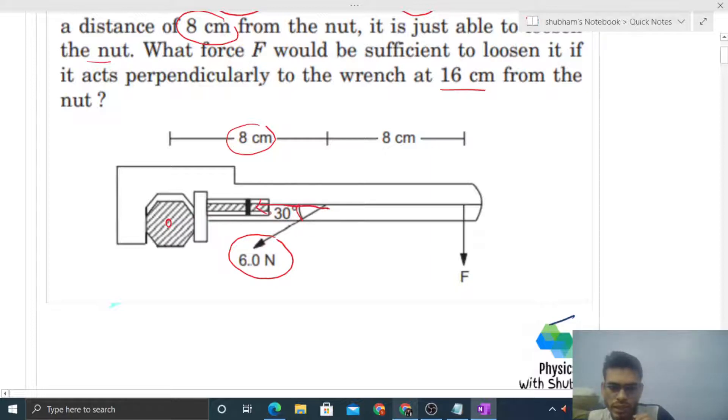6 cos 30° is 6√3/2, and 6 sin 30° is 6/2, which is 3 N. This force will pass like this. What we're finding is the torque about the center of the nut.